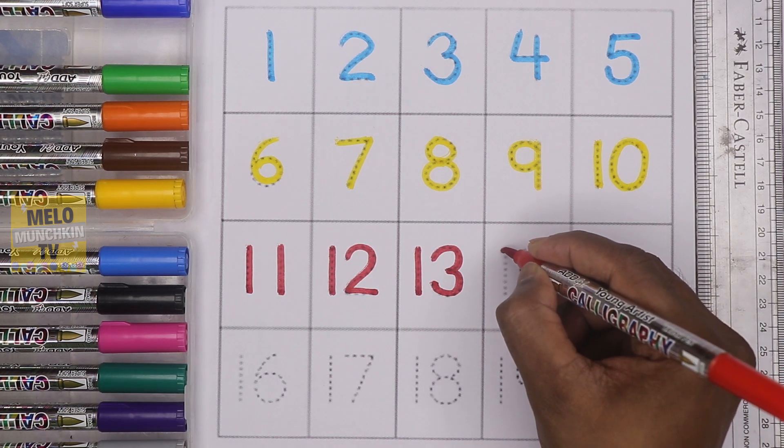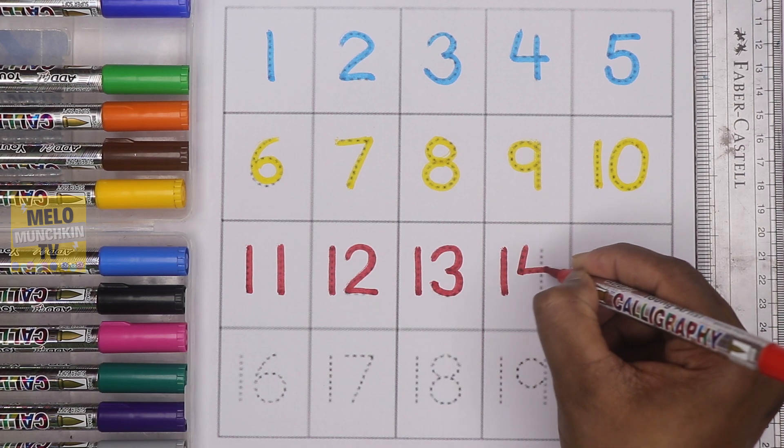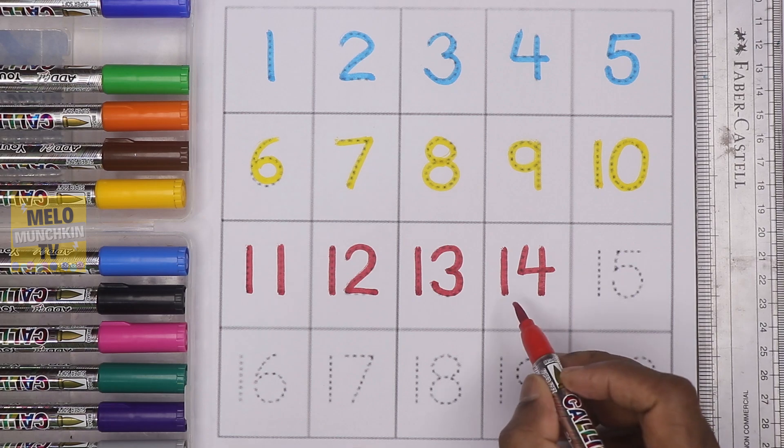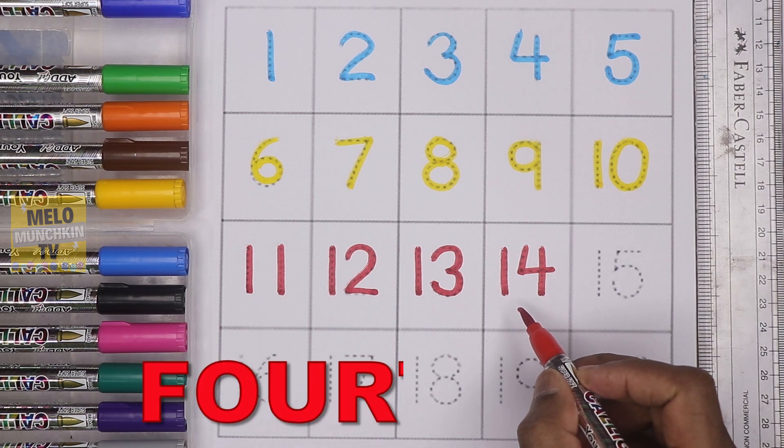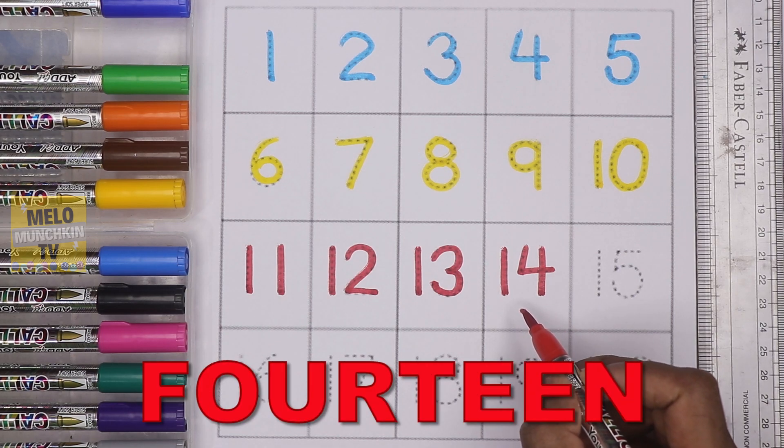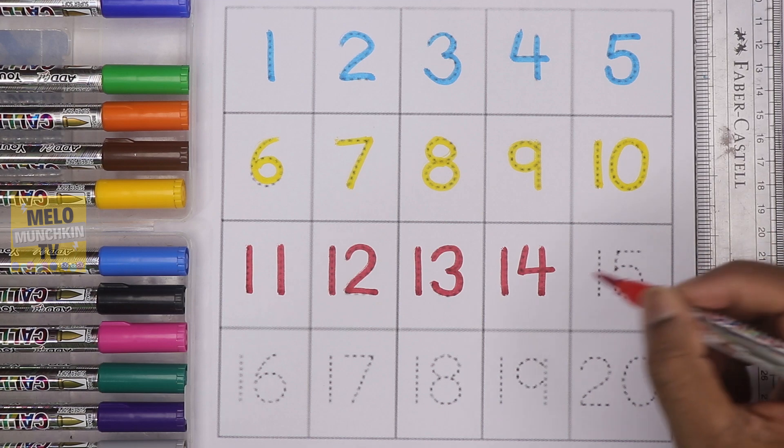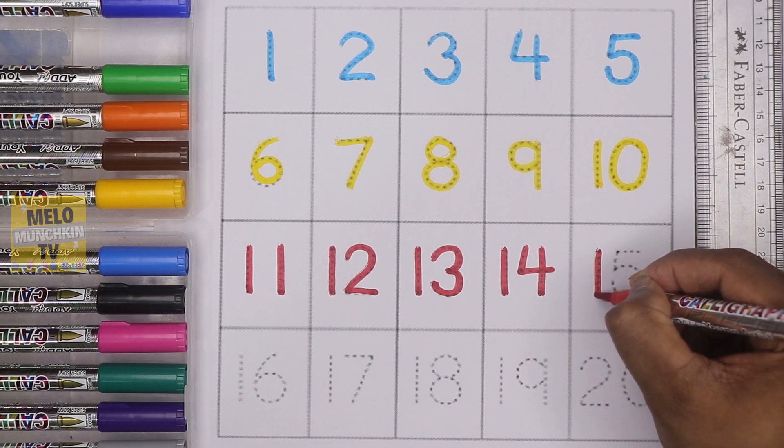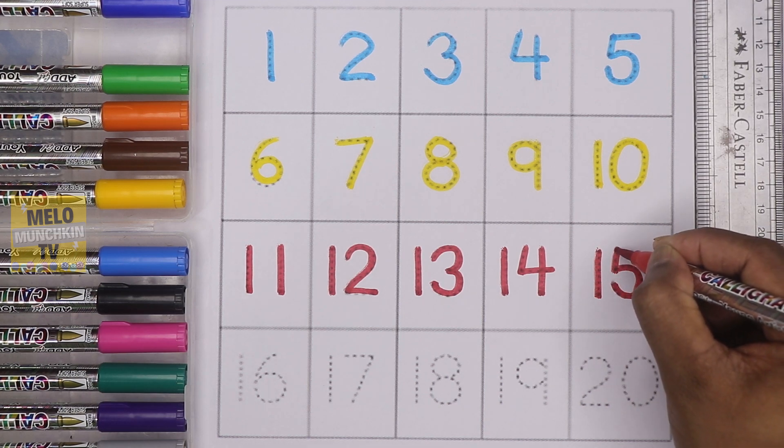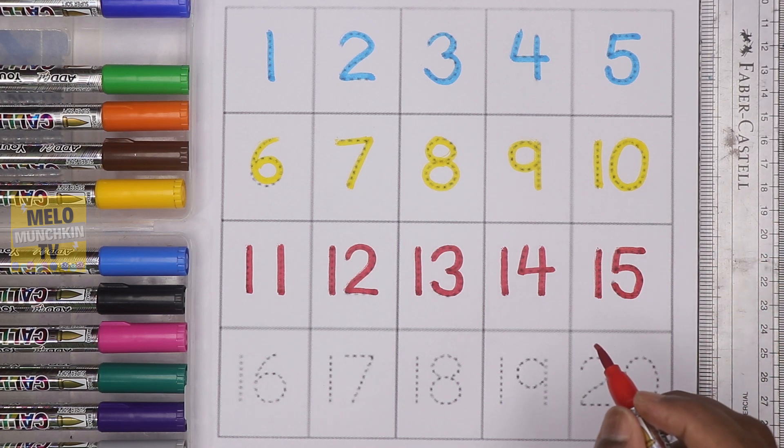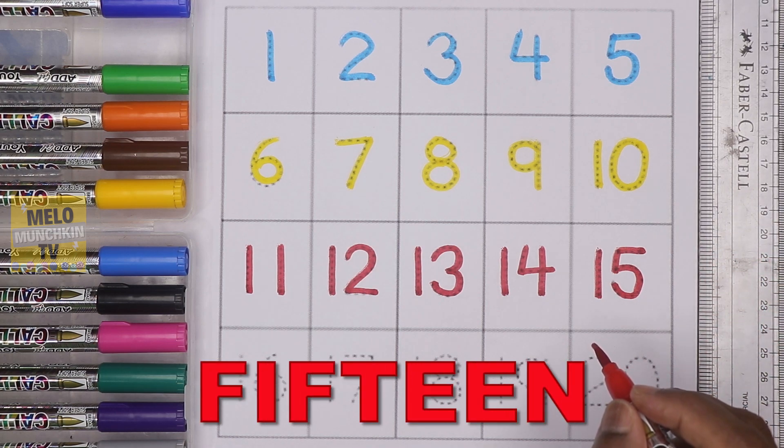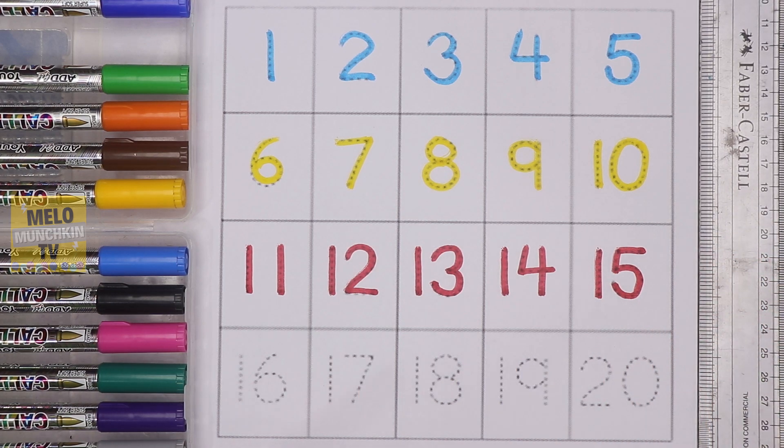Next, one-four, 14. The spelling is F-O-U-R-T-E-E-N, 14. Next, after 14 it is 15, one-five, 15. The spelling is F-I-F-T-E-E-N, 15.